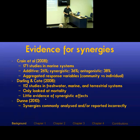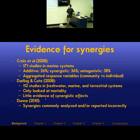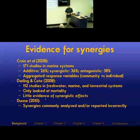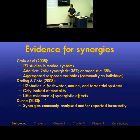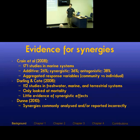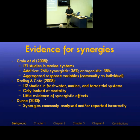In 2008, two papers came out in the same issue of Ecology Letters. One by Crane et al. looked at 171 studies across all marine systems and found roughly a third for each category: 26% additive, 36% synergistic, and 38% antagonistic. A second paper by Darlene and Kotab, a meta-analysis of 112 studies across freshwater, marine, and terrestrial systems, looked only at mortality as a response variable and found little evidence of synergistic effects overall — the average effect is not synergistic even though individual studies did report them.